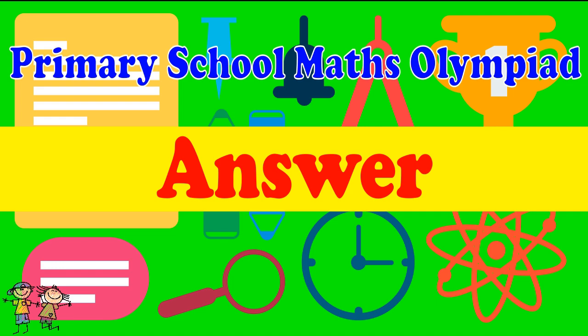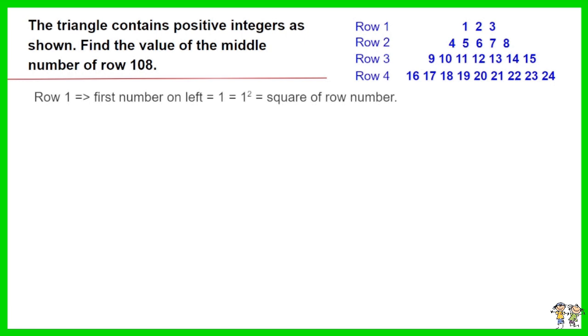Here is the recommended answer. The leftmost number of row 1 is 1 which is square of 1. The middle number of row 1 equals the leftmost number plus row number equals 1 plus 1 equals 2.